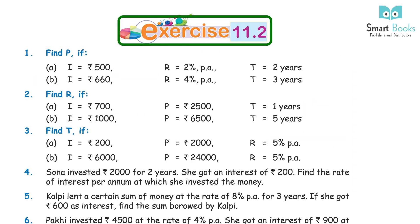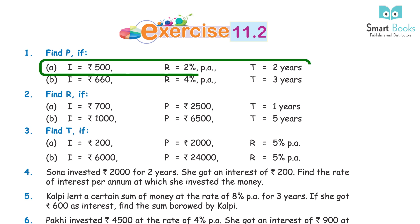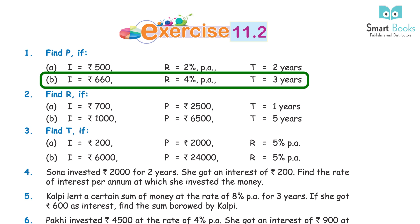Exercise 11.2, Question 1: Find P. (A) I = Rs 500, R = 2% PA, T = 2 years. Answer: Rs 12,500. (B) I = Rs 660, R = 4% PA, T = 3 years. Answer: Rs 5,500.